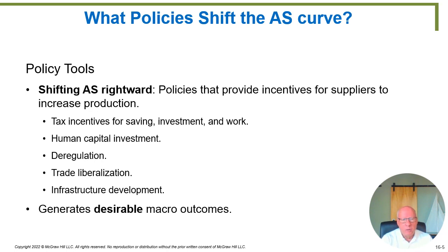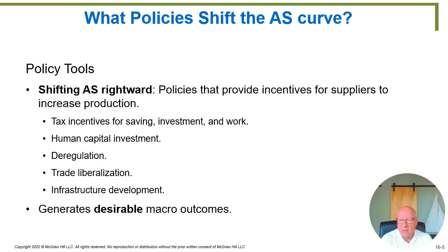Deregulation refers to removing government regulations when those regulations have become onerous. Some regulation is necessary — we can think of safety regulations — but even safety regulations can be overdone, where the total value of the regulation is actually lower than the cost. When that starts happening, instead of shifting the aggregate supply curve to the right, you start shifting it to the left, reducing your society's ability to produce goods and services for any level of work effort.